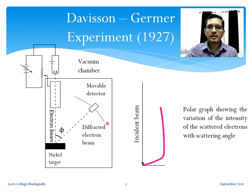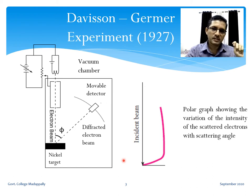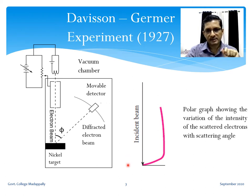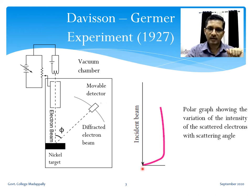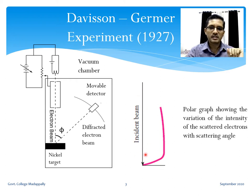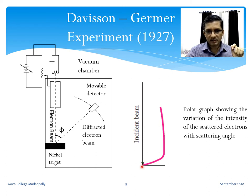Then they plotted a polar graph showing how the intensity of the scattered electrons varies with scattering angle. In this polar graph there is no x and y axis. The incident beam acts as a reference axis — we can take it as the z-axis — and the polar angle is measured with respect to this reference axis. The origin is the point of incidence of the incident beam on the nickel crystal.